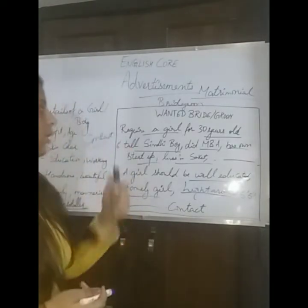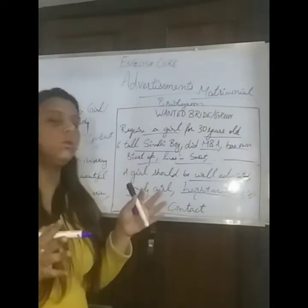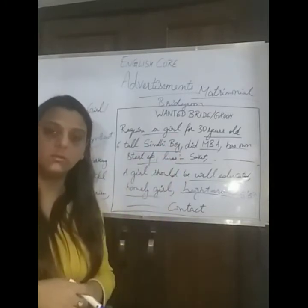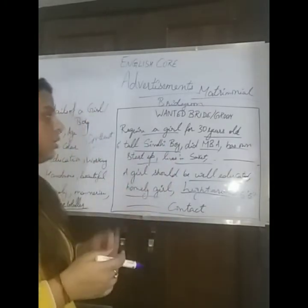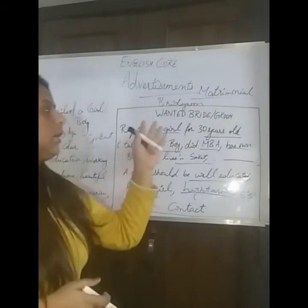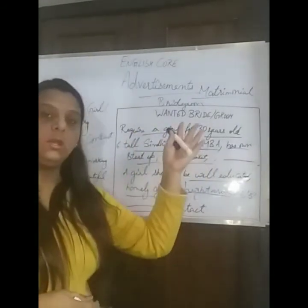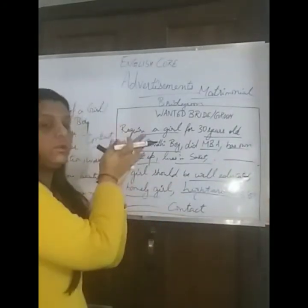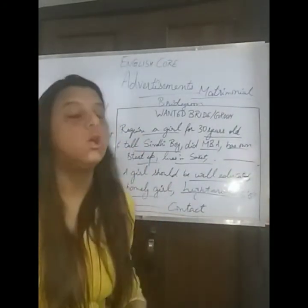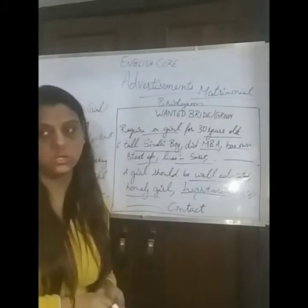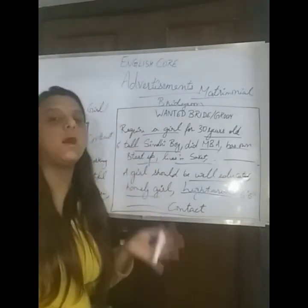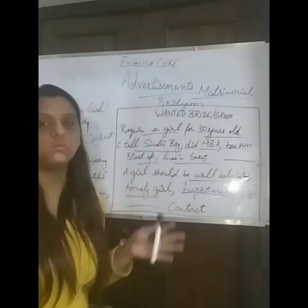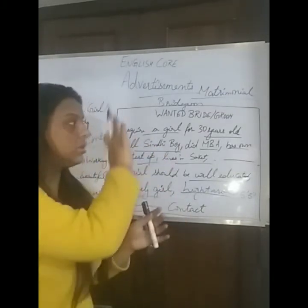Alternatively, I can write: 'Require a beautiful girl' and then give her details first, such as 'age around 30 to 32 years.' So you can start by giving the details of the person you are searching for. You need to see the balance of what you need to write. Here I have given the details of the boy first and then asked for the girl, but you can frame the ad either way — for a boy or a girl, bride or groom.